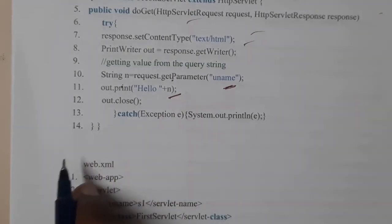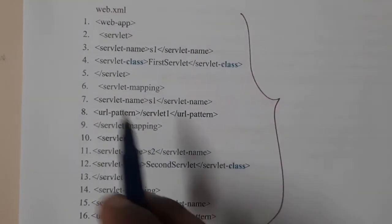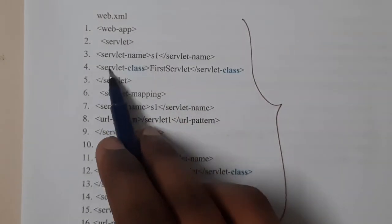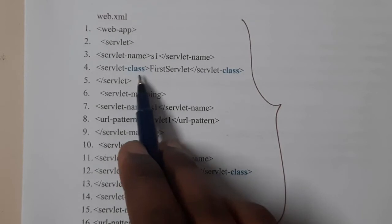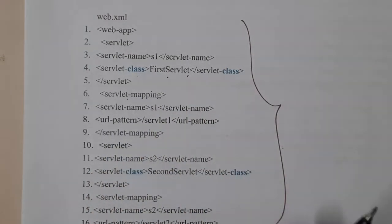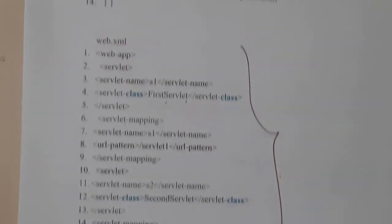If you observe the XML file it will be also the same like web.xml. Web app servlet, the servlet name is s1, class name is first servlet, servlet close like that, in that way, same process. So the output if you ask me about the output, the output will also be the same, there is no change in the output.